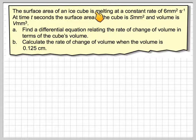The surface area of an ice cube is melting at a constant rate of 6 mm² per second. At time t seconds, the surface area of the cube is s mm² and the volume is v mm³. Find the differential equation relating the rate of change of volume in terms of the cube's volume. Calculate the rate of change of volume when the volume is equal to 0.125 cm.